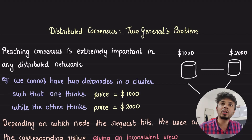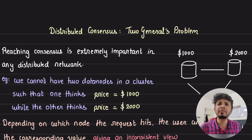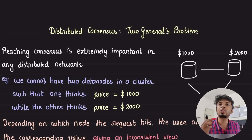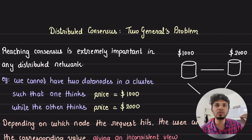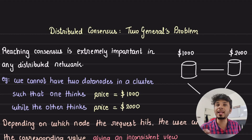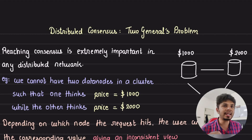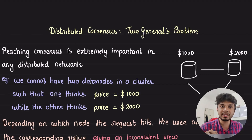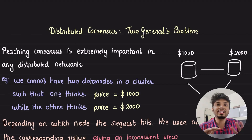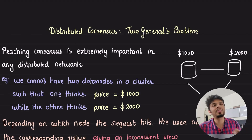Distributed consensus is extremely important to build a robust distributed system, because it is very common for a bunch of nodes to need to agree upon a common value — like a leader node, some secret value, some meta information, or just a value of a key in a database. In this video we understand why it is impossible to achieve consensus in a distributed system where the communication channel is unreliable, through a real-world analogy called the Two Generals Problem.